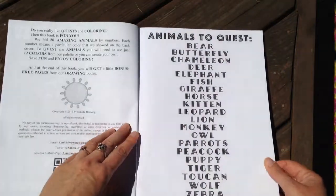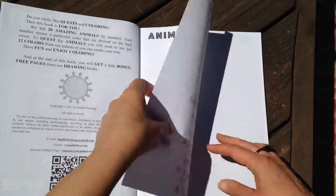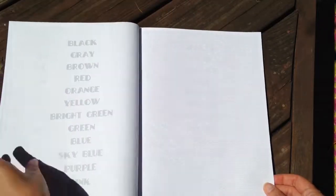So at the beginning it lists all the different animals in the book. I don't think they're in order. And then through the rest of the book, all the pages, you can't really tell what you're going to be coloring.